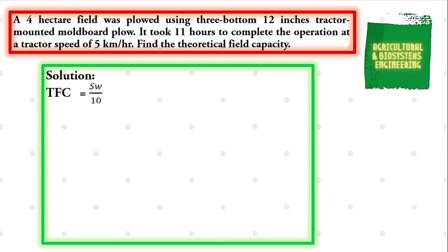Where TFC is the theoretical field capacity in hectares per hour, S is our speed in kilometers per hour, and W is the width in meters.